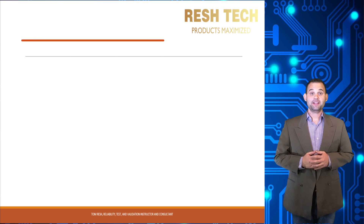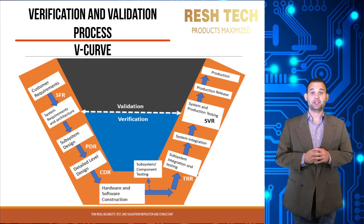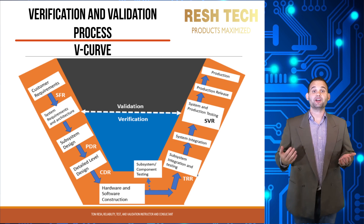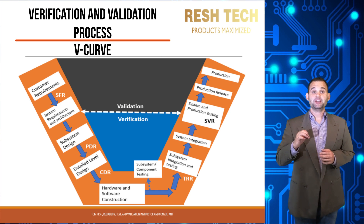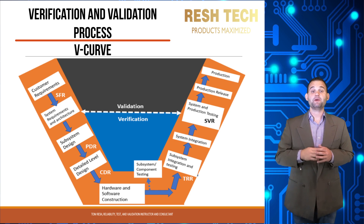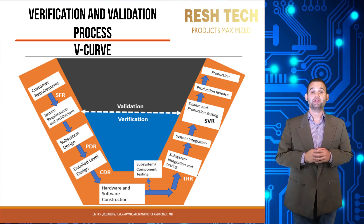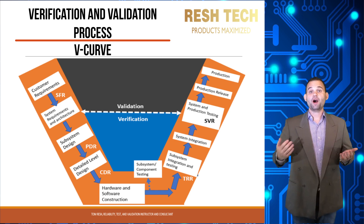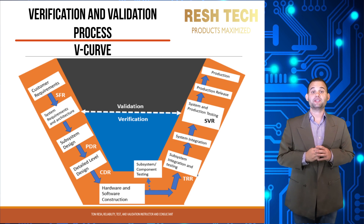Let's cover the verification and validation process for a product or system development life cycle. Pictured is the V-curve. This diagram provides the process of how to develop, verify, and validate a product based on customer needs or requirements. The left-hand side of the curve is the design process, while the right-hand side is the verification and validation process.